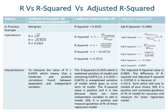To interpret: R equal to 0.5925 means a moderate and positive correlation exists between the dependent and independent variables. The R-squared of 0.3525 represents the explained variation of the model, while the remaining 0.6475 is unexplained variation that goes to the error term. The R-squared value is positive but low because there are more independent variables to add to the model; still, it is positive and measures goodness of fit of the linear regression model.